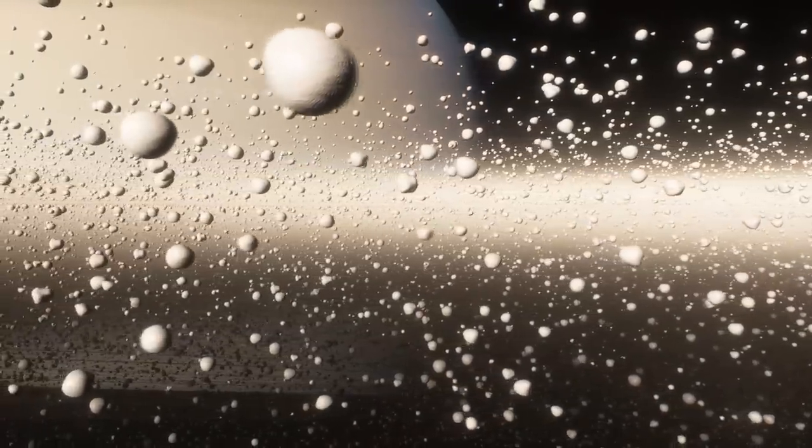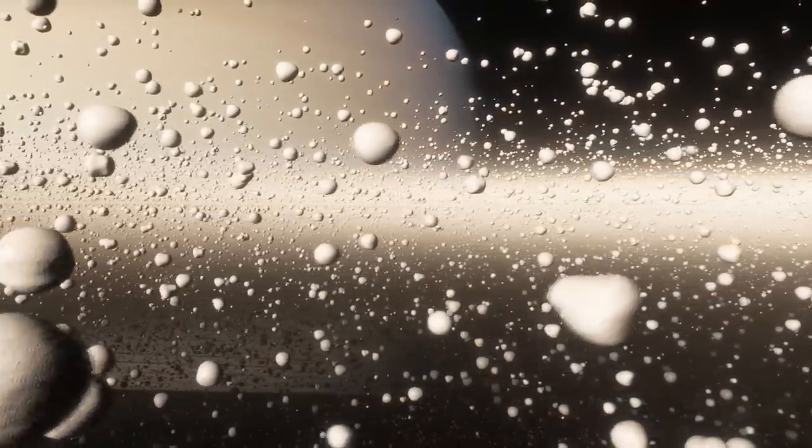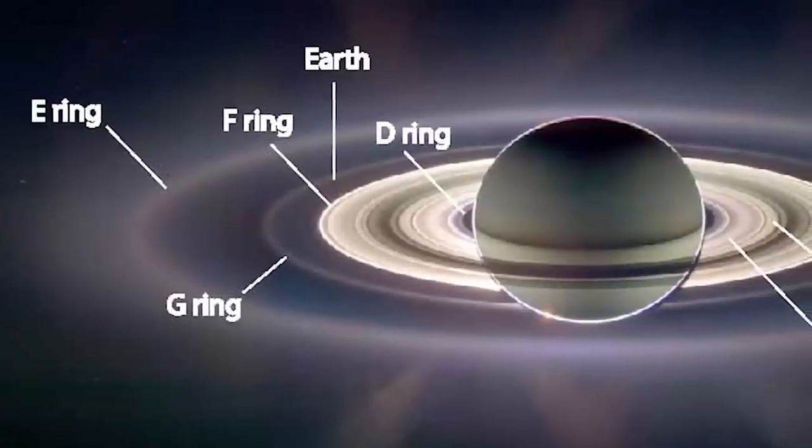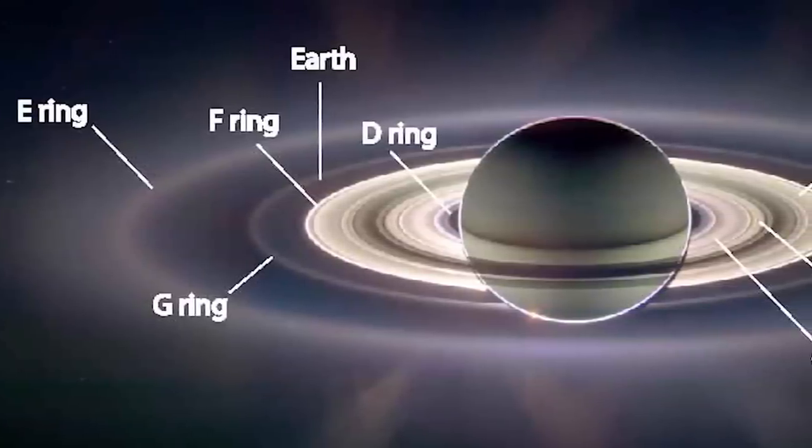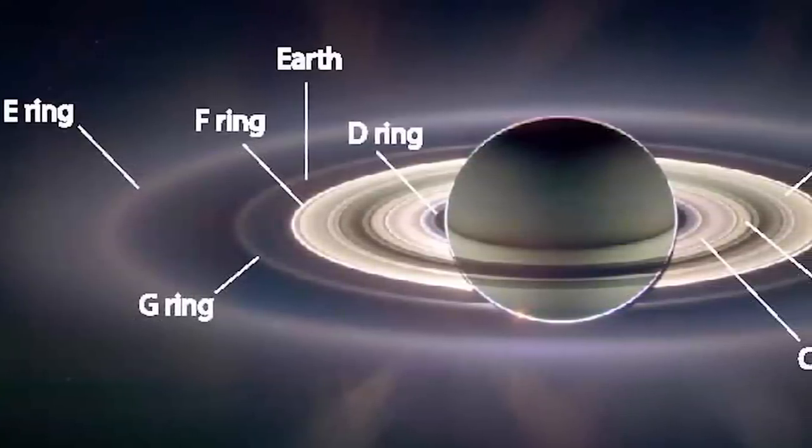These seven rings have been named by the first seven letters of the alphabet. Thus, as they were discovered, we find the rings A, B, C, D, E, F, G.